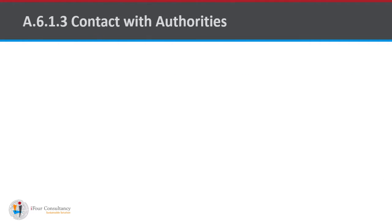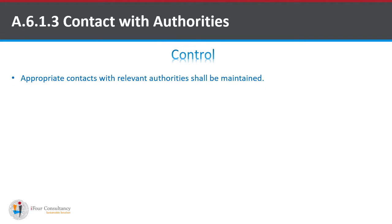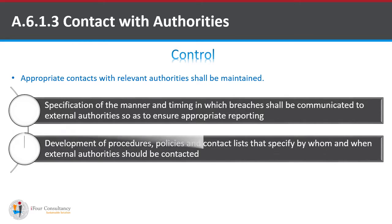A.6.1.3, i.e. contact with authorities. The control states that appropriate contacts within the relevant authorities shall be maintained. This further explains specification of the manner and timing in which breaches shall be communicated to the external authorities to ensure appropriate reporting, and development of procedures, policies and contact lists specifying by whom and when external authorities should be contacted.